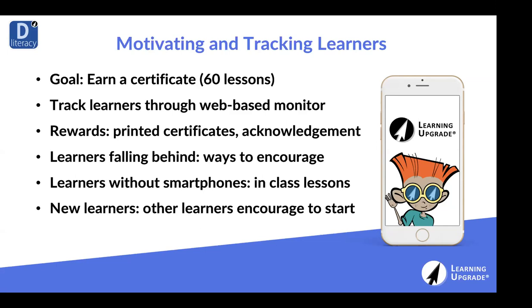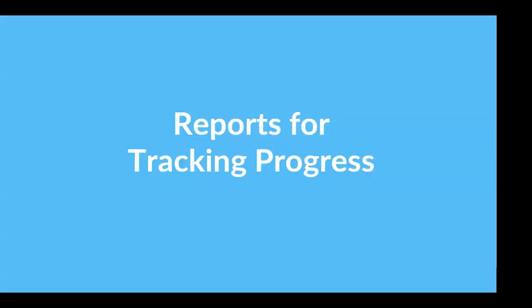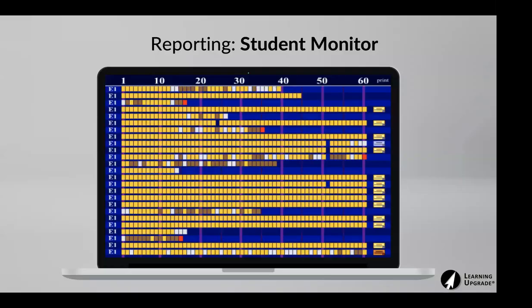The ones we want to keep a closer eye on are the 20–30% who don't get started, and the 20–30% who might be struggling initially. I want to show you some best practices on how you can work with them, and most importantly how you can identify them. Number one is the student monitor — in our teacher menu, you log in and it's organized into five tabs, the first being the students tab, which contains the student monitor.